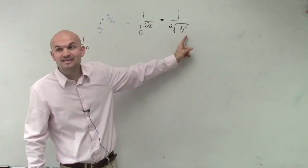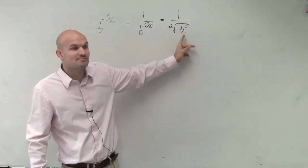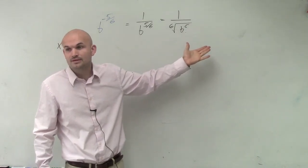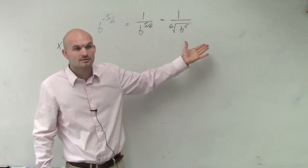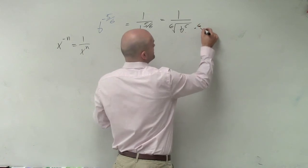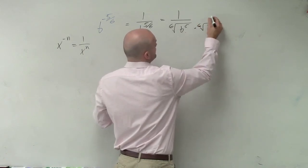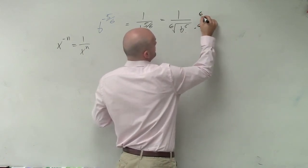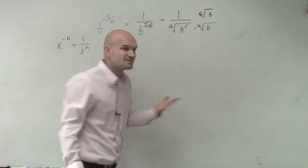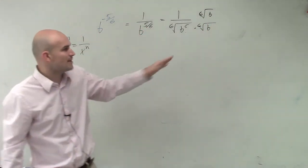So if right now I have b to the fifth, to get that to be b to the sixth power, I have to multiply by b. So I'd have to multiply by the sixth root of b on the top and the bottom — that's what we did last class period. We talked about how to simplify those with the powers.